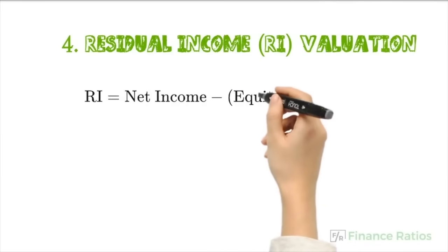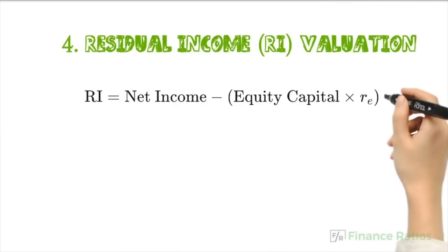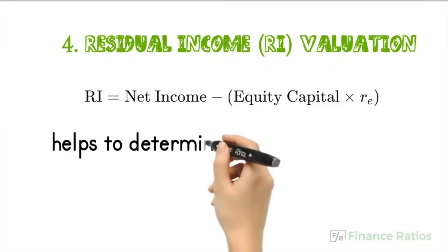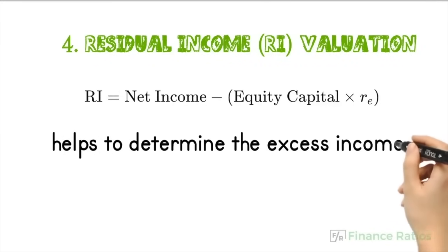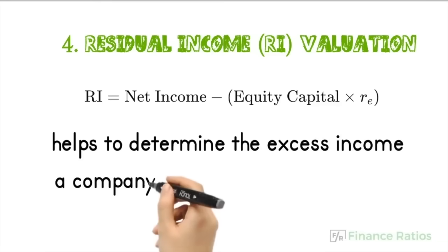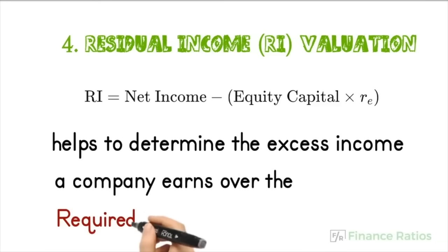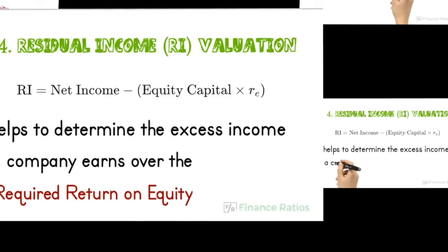Number four is residual income valuation. It is equal to net income minus equity capital multiplied by the required rate of return. It helps to determine the excess income a company earns over the required return on equity capital, showing if a company adds value beyond shareholder expectations.